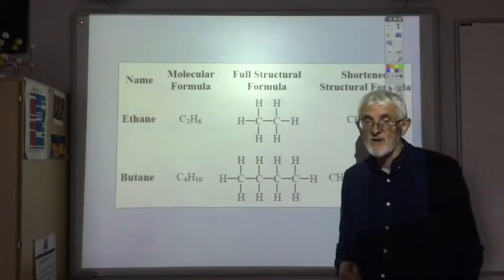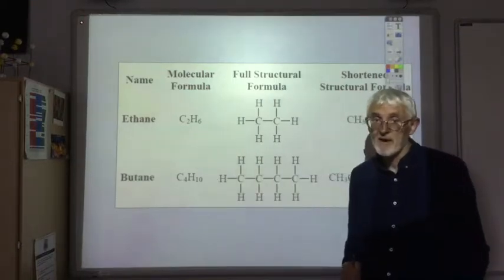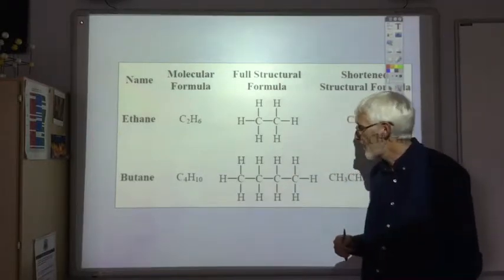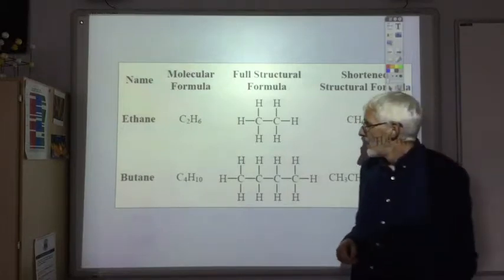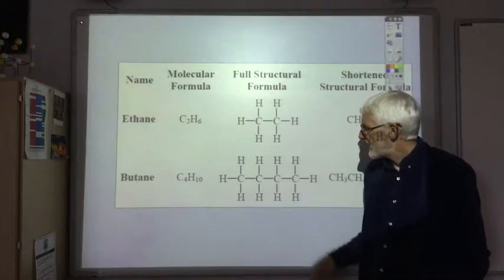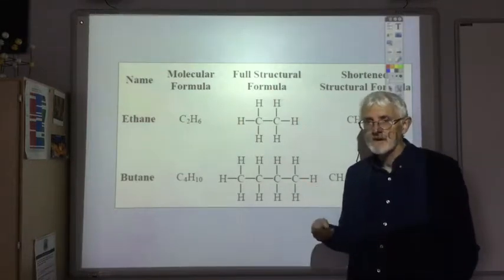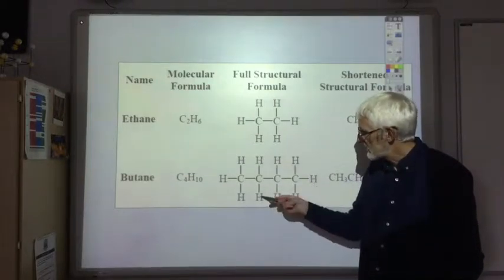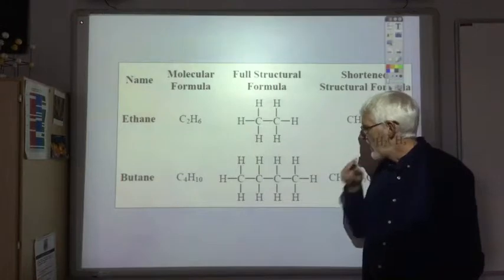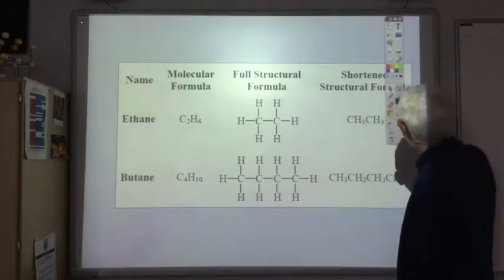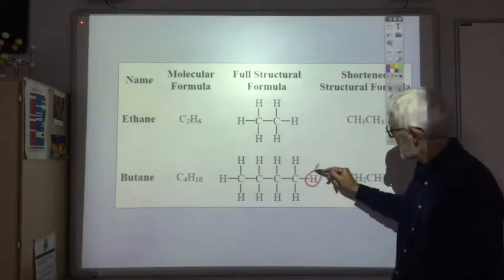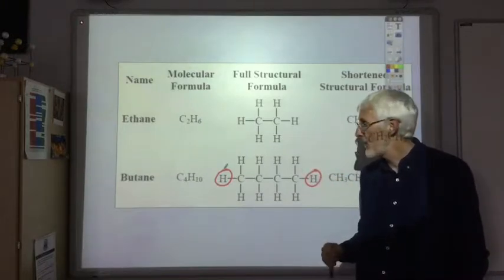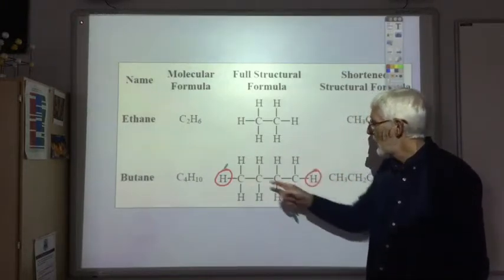So make sure if you're asked for a molecular formula you give a molecular formula, and if you're asked for a structural formula then you can give either a full or a shortened structural formula. It's worth noticing in the general formula CnH2n+2 that every carbon has got two hydrogens attached to it — that's where the CnH2n comes from. But then the end carbons each have an extra hydrogen, which is where the plus 2 comes from.